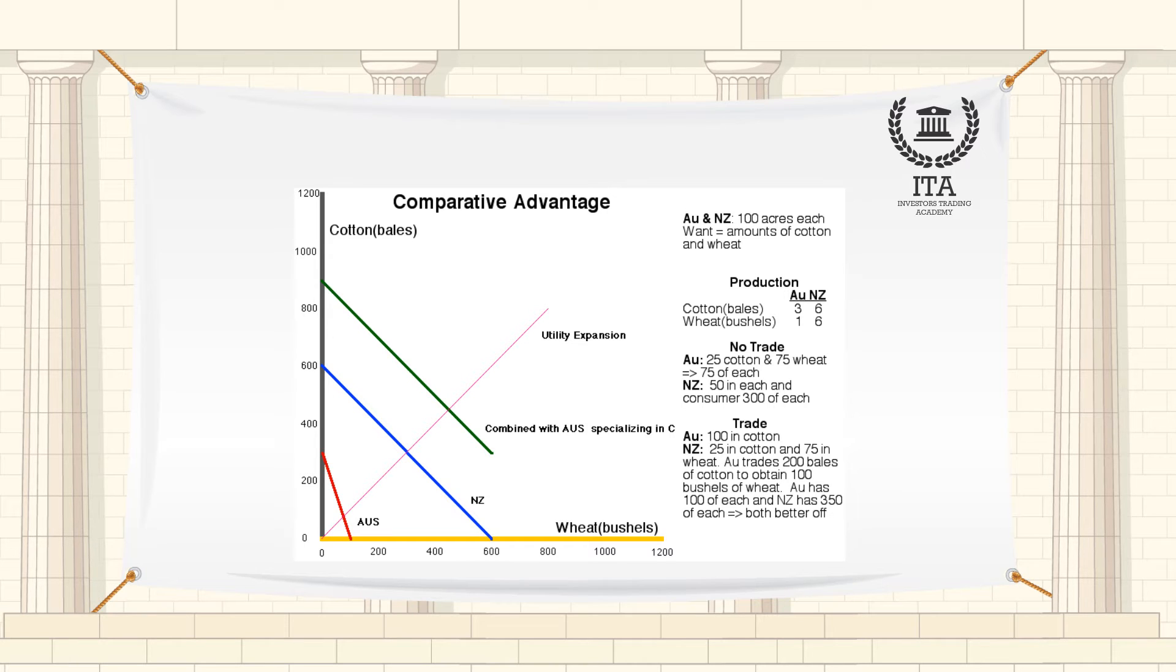If a country does what it has a comparative advantage in and sees its income grow as a result, it can afford better education and infrastructure. These in turn may give it a comparative advantage in other economic activities in future.